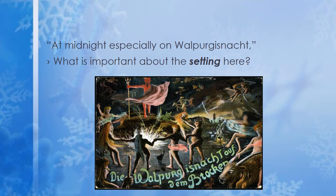'At midnight, especially on Walpurgisnacht.' We're getting a very specific setting: a particular night and a particular time — midnight, the darkest point of night. Walpurgisnacht is a name for the night of demonic celebration. It's the opposite of day, the exact opposite — the darkest, deepest time of night in contrast to daytime life. This is where dark things come out.